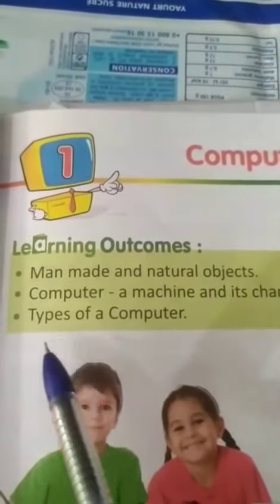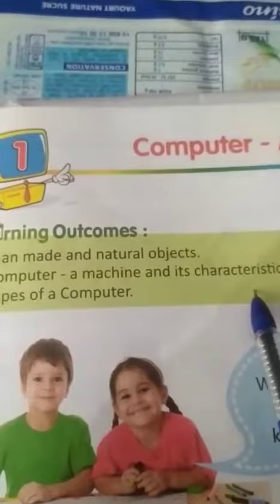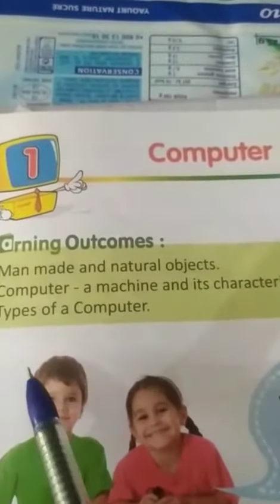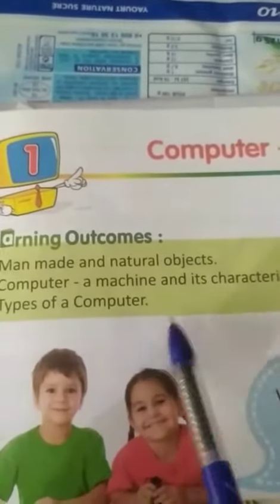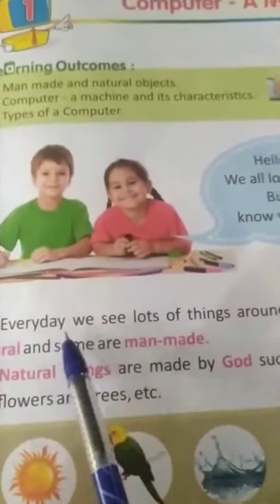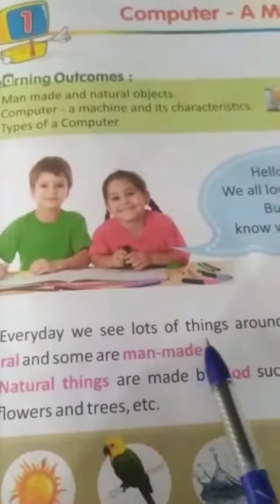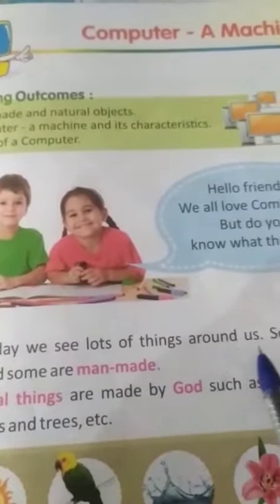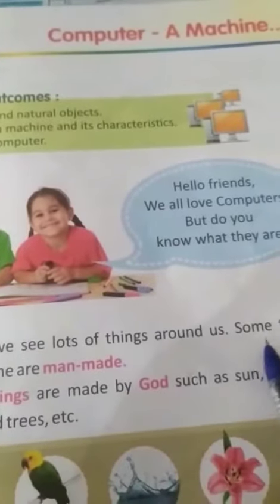Learning Outcomes: Man-made and Natural Objects, Computer — a Machine and its Characteristics, and Types of Computer. Every day we see lots of things around us.